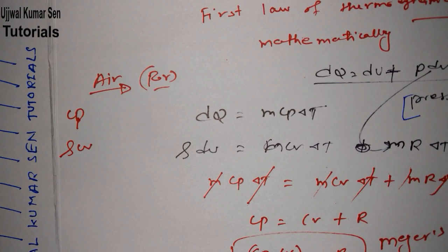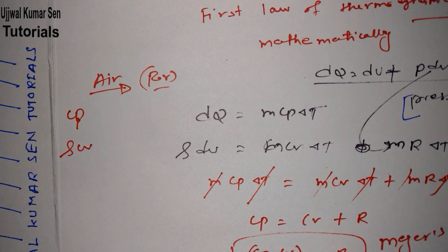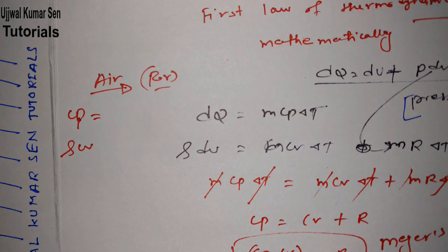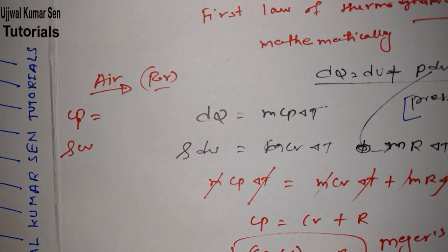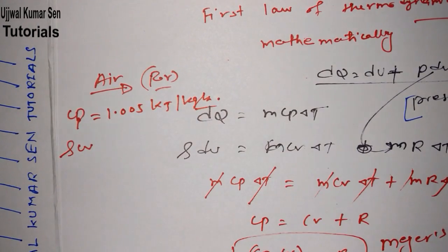And what is the value of Cp for water you need to know. So what is Cp basically for air? For air, Cp is 1.005 kilojoule per kg kelvin.